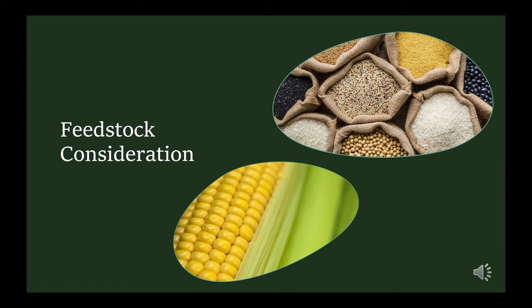One of the most important choices when considering how to model the process was to look at what feedstock would be used. The process ultimately ended up bypassing some of the pre-treatment steps. Pictured here is corn and rice — rice is a fundamental crop for 3.5 billion people worldwide, and rice bran constitutes about 10% of that product. Rice bran is the leaves and stems from the rice plants, which aren't eaten by humans or animals, so they make an optimal option for feedstock.